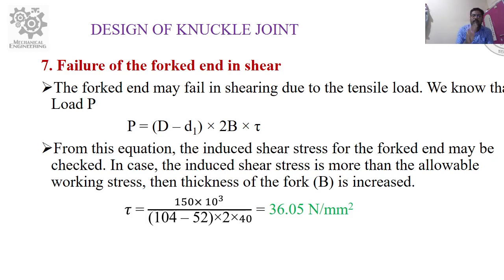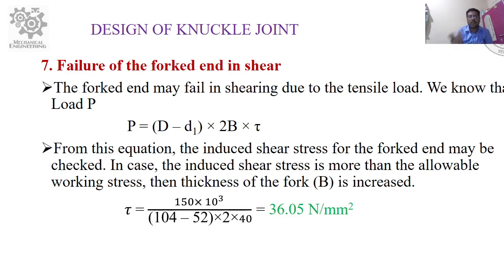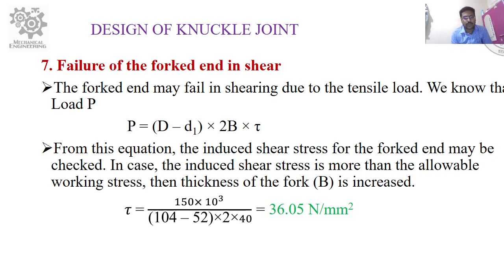Step seven: Failure of the forked end in shear. Formula: P = (D − d₁) × 2b × τ. Induced shear stress τ = P / ((D − d₁) × 2b) = 150 × 10³ / ((104 − 52) × 2 × 40) = 36.05 N/mm². This is within the allowable shear stress; if induced stress exceeds allowable, the thickness of the fork must be increased.